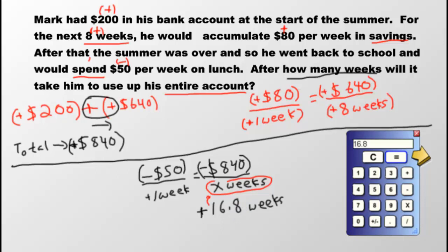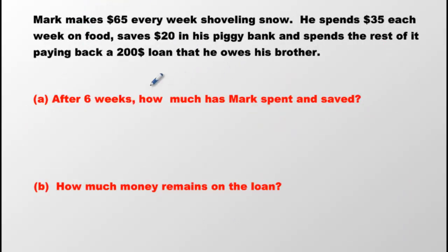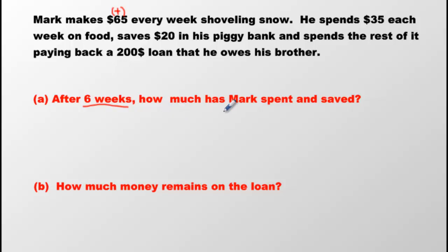Question 2. Mark makes $65 every week shoveling snow — positive or negative? It's a positive value; he's making money, he's earning it, he's getting richer. He spends $35 each week on food, saves $20 every week in his piggy bank, and spends the rest paying back a $200 loan he owes his brother. We want to know after 6 weeks: how much has Mark spent, and how much has he saved?